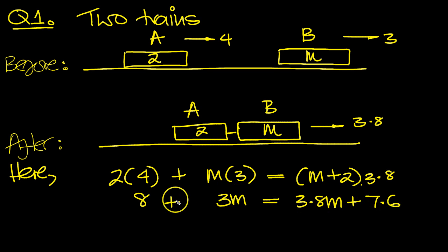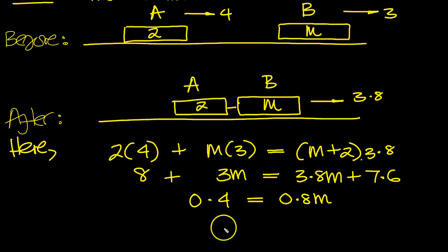So move the 3M over, and at the same time we'll move the 7.6 over to minus 7.6. 8 take away 7.6 is 0.4. 3.8 take away 3 is 0.8 lots of M. So that tells us what M is then.